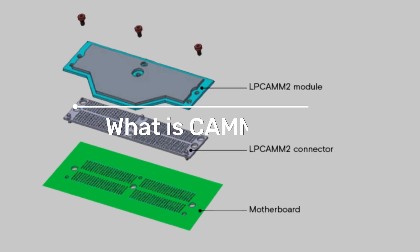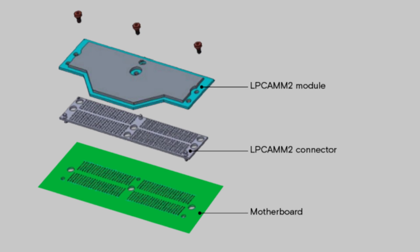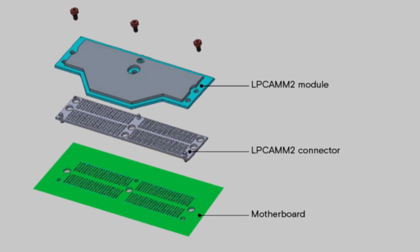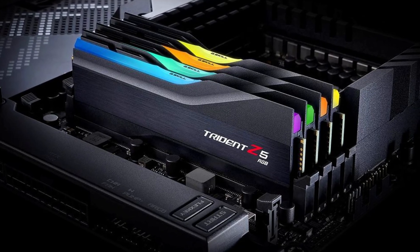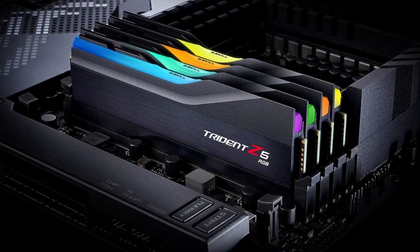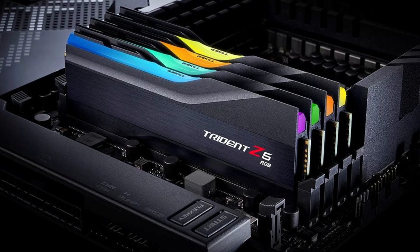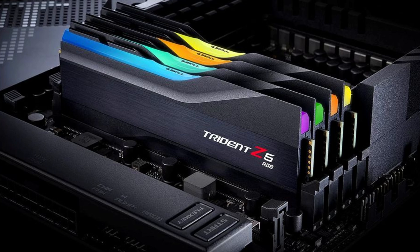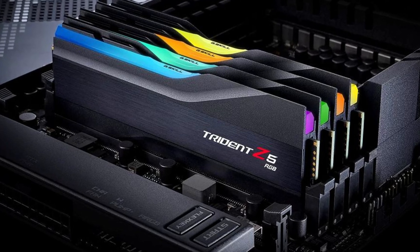What is CAM2 RAM? CAM2 stands for Compression Attached Memory Module 2. It's a new type of RAM designed to replace traditional LPDDR (low power double data rate) soldered memory modules. CAM2 offers the flexibility of upgrading memory in systems where it wasn't previously possible, such as ultra-thin laptops and portable consoles.